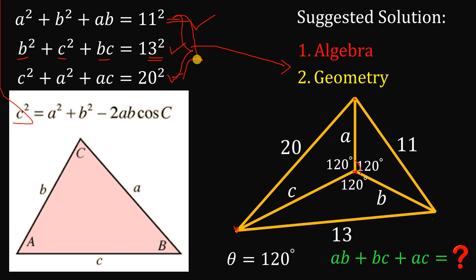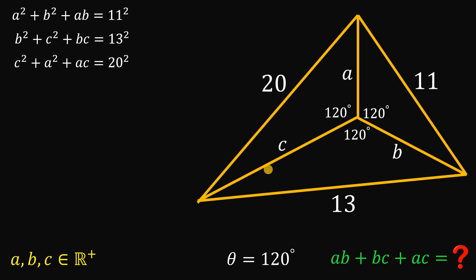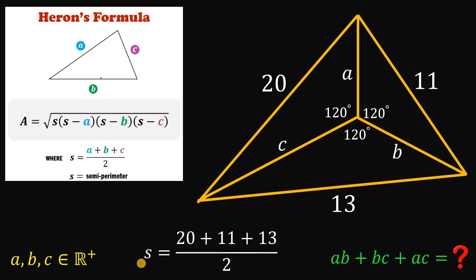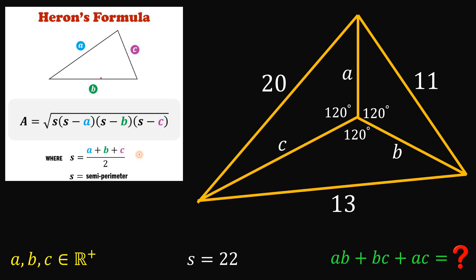So this algebraic question can be converted into this geometric problem. Now, the main question is still what is the value of AB plus BC plus AC, but this is now easy to solve. We will get the area of the big triangle using Heron's formula: Area equals the square root of S times (S minus a) times (S minus b) times (S minus c), where S is the semi-perimeter. The semi-perimeter S equals (20 plus 11 plus 13) divided by 2, which equals 44 divided by 2, giving us 22.